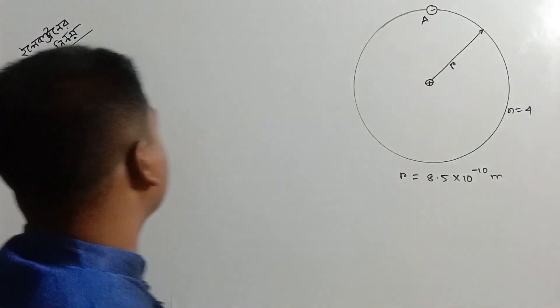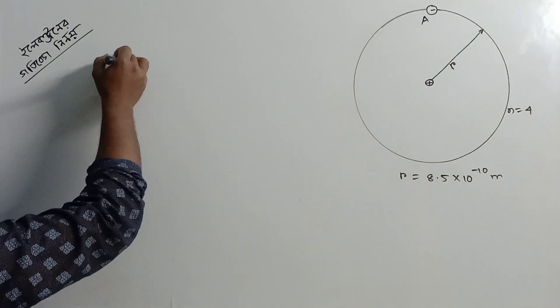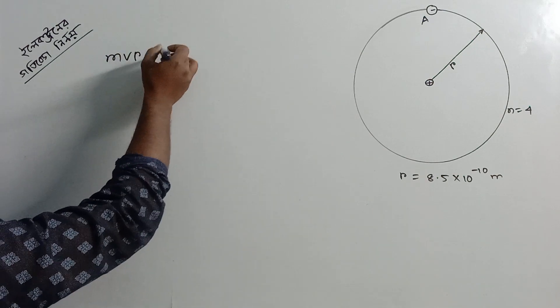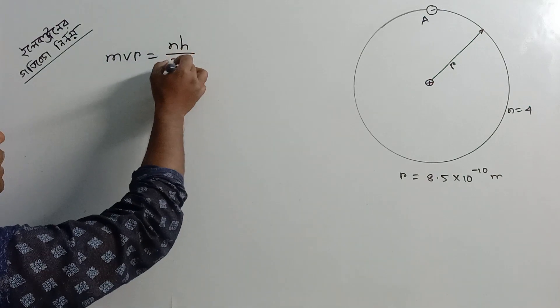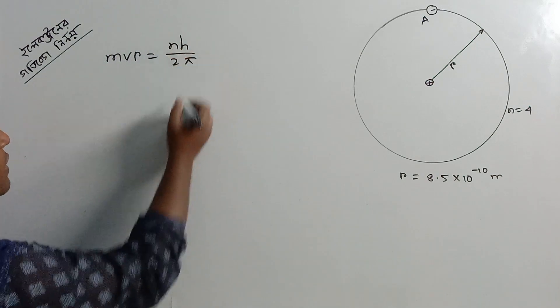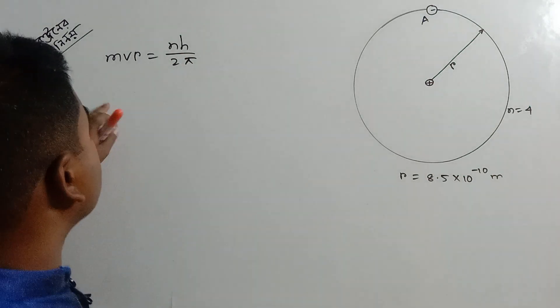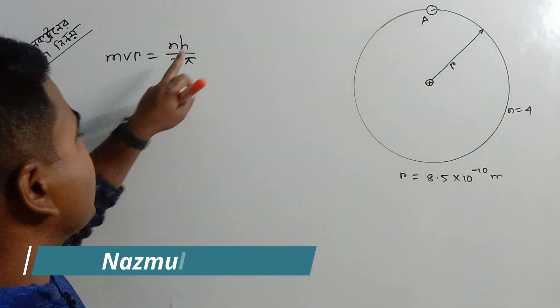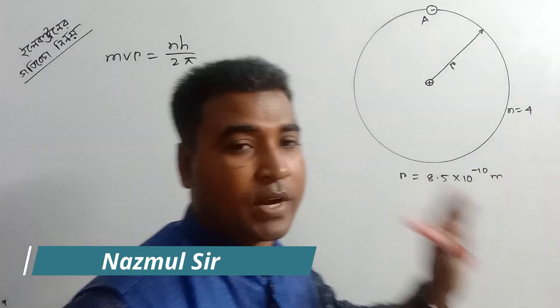The electron quantization condition: mvr is equal to n, h, 2pi. So, mvr = nh/2π.